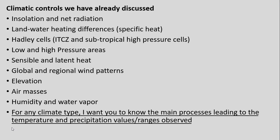We've spent time talking about insolation and net radiation, land-water heating differences, sensible and latent heat, the intertropical convergence zone, subtropical high pressure cells, low and high pressure areas, wind patterns, elevation, air masses, humidity, and water vapor — all these things are going to be important as we go through the climate types.